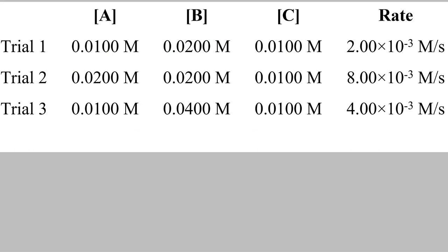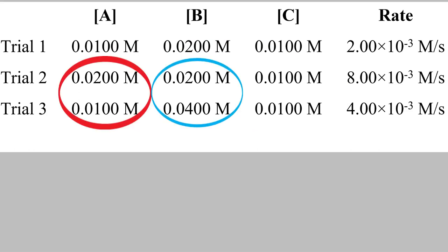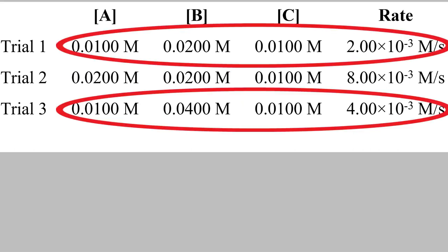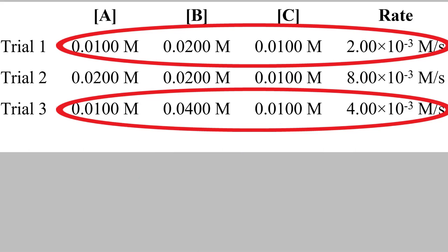Why not? Well, look carefully at the concentrations. If you compare trials 2 and 3, you'll notice that two of the concentrations change — and that's not good. We need to control all but one of our concentrations. So instead, let's compare trial 3 to the first trial. When we do that, we can see that the concentrations of A and C are the same — those are our controls — and the concentration of B is the variable. So just like before, we take the ratio of the two rates and of the concentrations of B. We find that the rates have a ratio of 2 and the concentrations also have a ratio of 2, making our exponent equal to 1.